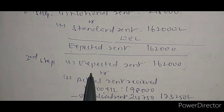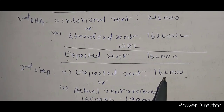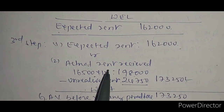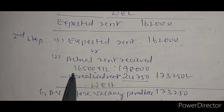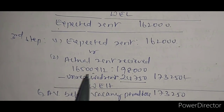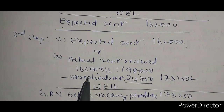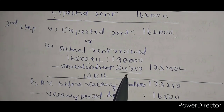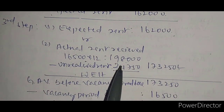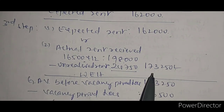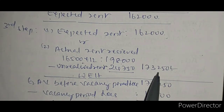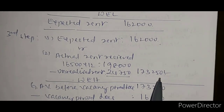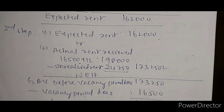In the third step, expected rent is compared with actual rent received. Expected rent is one lakh sixty two thousand. Actual rent is sixteen thousand five hundred into twelve months, giving one lakh ninety eight thousand, minus unrealized rent of twenty four thousand seven fifty, giving one lakh seventy three thousand two fifty. Whichever is highest — one lakh seventy three thousand two fifty is highest — that is called gross annual value before vacancy period loss.